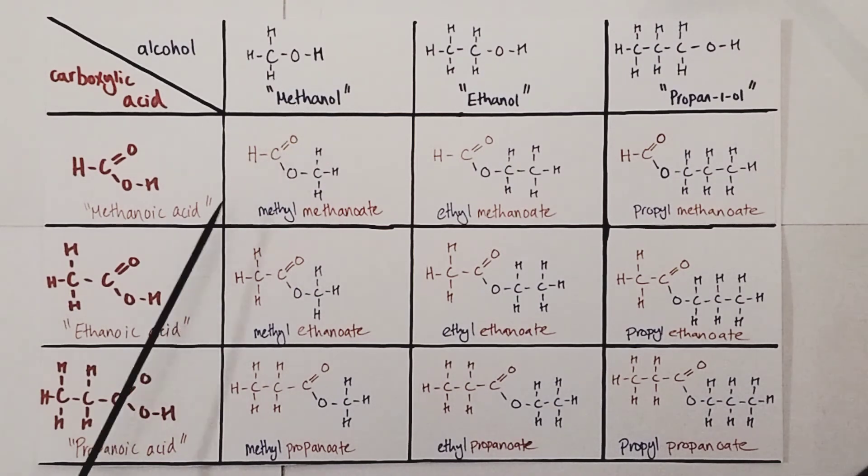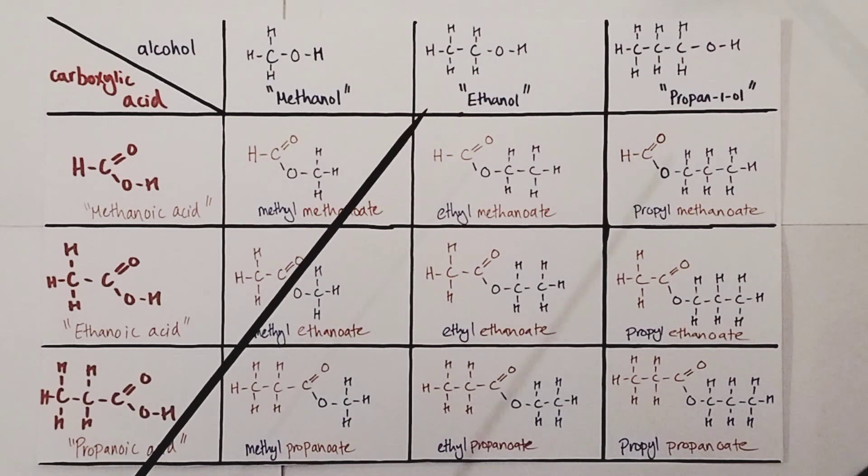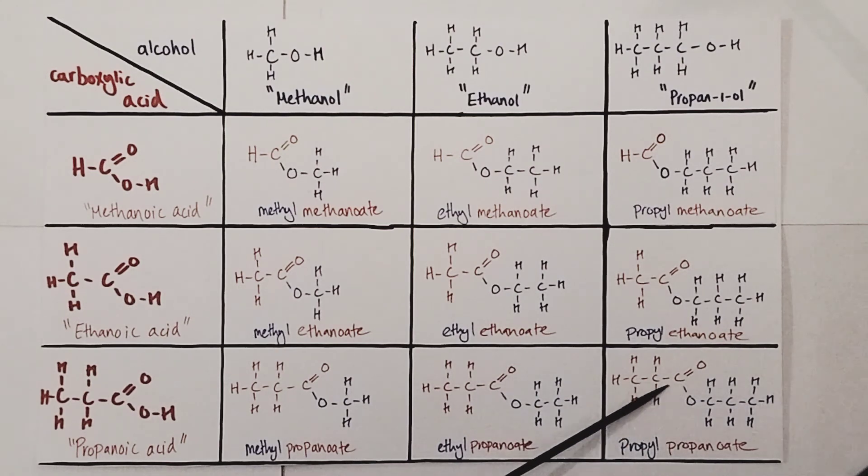If I reacted methanol with ethanoic acid, I'd form methyl ethanoate. Ethanol with ethanoic acid would be ethyl ethanoate, and propan-1-ol with ethanoic acid would be propyl ethanoate. And finally, if I reacted propan-1-ol with propanoic acid, it would be propyl propanoate.